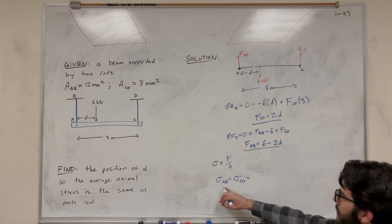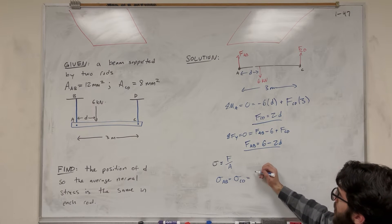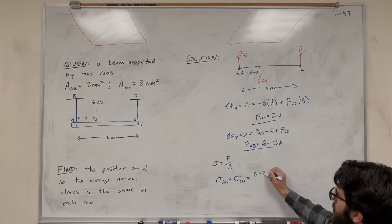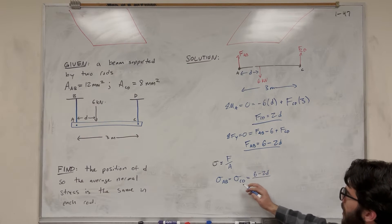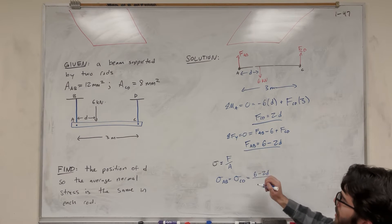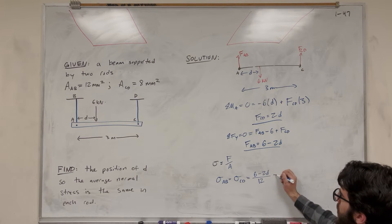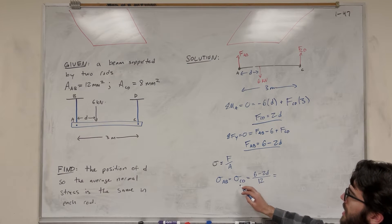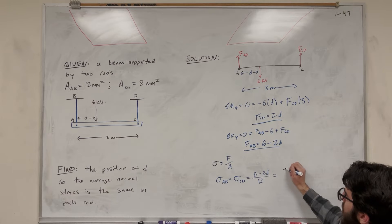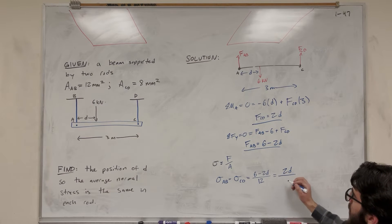So let's set them up. So let's do AB first. So the force of AB is 6 minus 2D. Now the area of AB that's given to us is 12. Now we need that to be the normal stress of CD. So CD we know is 2D, and its area is 8.